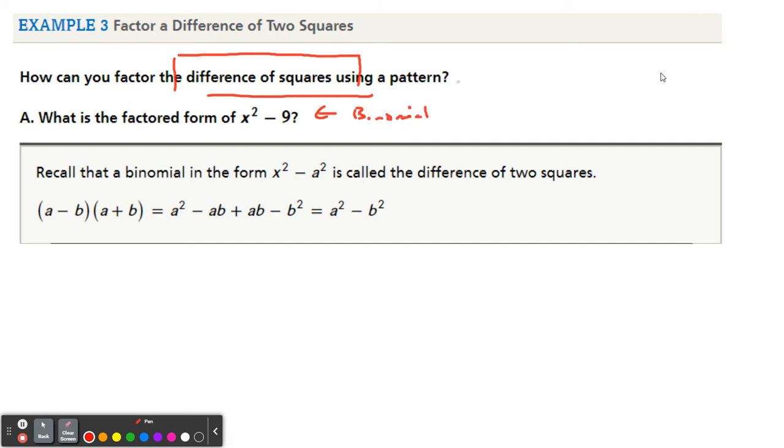And the only way the middle term can cancel is that when you add them together, they're opposite signed, and the way that you achieve that is that your parentheses are exactly the same except one is positive and one is negative.